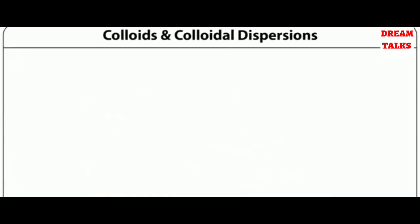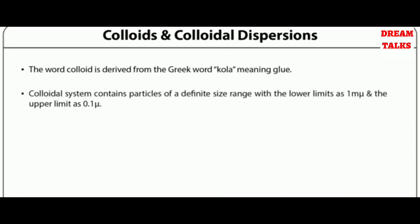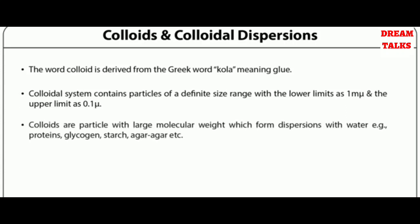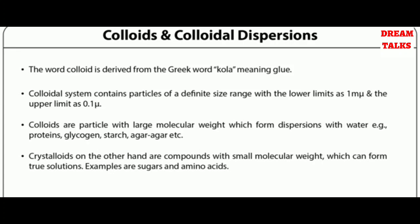The word colloid is derived from the Greek word 'cola' which means glue. Colloidal systems contain particles of a definite size range with the lower limit as 1 millimicron and the upper limit as 0.1 micron. Colloids are particles with large molecular weight which form dispersions with water, for example proteins, glycogen, starch, agar-agar, etc. Crystalloids, on the other hand, are compounds with small molecular weight which can form true solutions; examples are sugars and amino acids. Particles above 0.1 micron are generally visible and form suspensions with water.